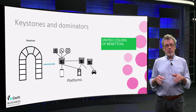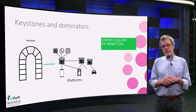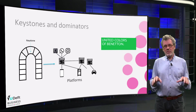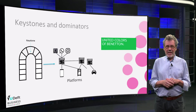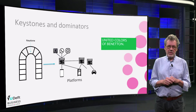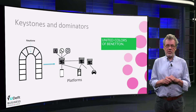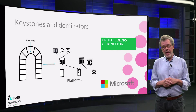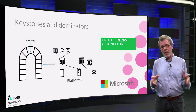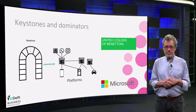The core player can also be a dominator. They extract value mainly for themselves and leave less space to others. Typically these are companies from Silicon Valley like Microsoft, Apple, Google and many others.